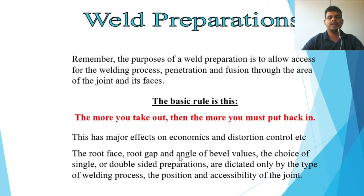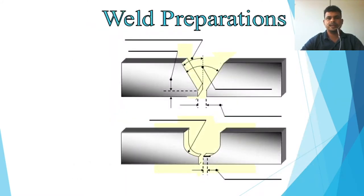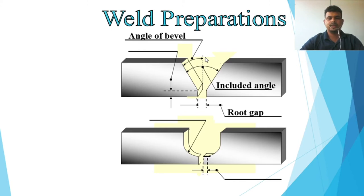The root face, root gap, and angle of bevel for single or double bevel preparation are determined by the type of welding process, the position, and accessibility of the joint. In the weld preparation diagram, you can see the bevel angle, the included angle — which is two bevel angles combined — and the root gap, which must be maintained to allow penetration.